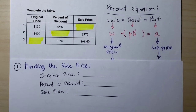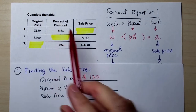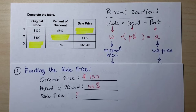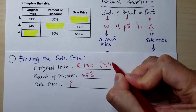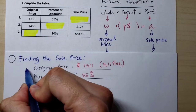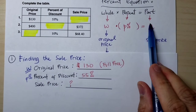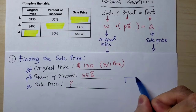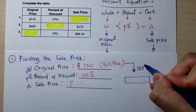Let's start with the first problem. The original price for number one is $130, and the percent of discount is 55%. The sale price is what we are trying to find. The original price is the full price, so this would be our W. The percent of discount will be our percent, and the sale price would be our A. If I were to draw a box, this represents the full price — 100% is the full price.